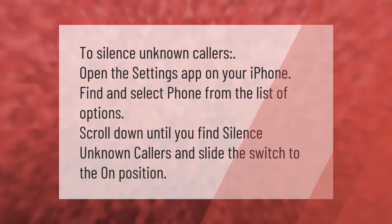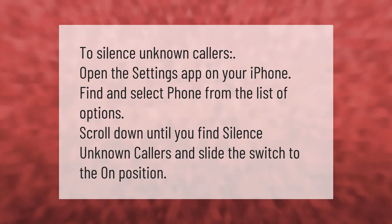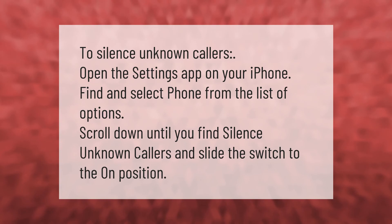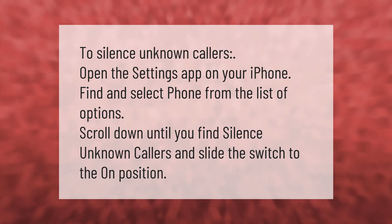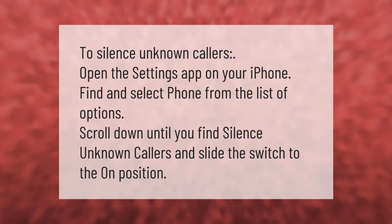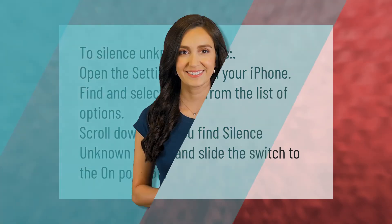To silence unknown callers, open the Settings app on your iPhone, find and select Phone from the list of options, scroll down until you find Silence Unknown Callers, and slide the switch to the on position. Thank you for watching — please subscribe and hit the bell notification.